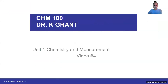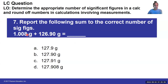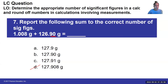Let's see if you're right. If we add these two together, our first number has three digits and three decimal places, and our second number has two decimal places. Our final answer can only have two decimal places, so that eliminates some answer choices. When we add these two together we get 127.908. We have 908, so we round this zero up to one. Our answer would be C.